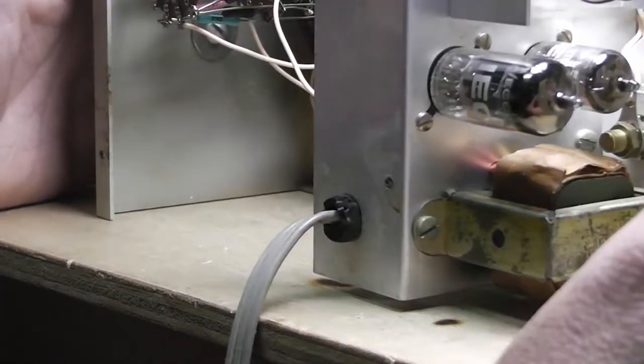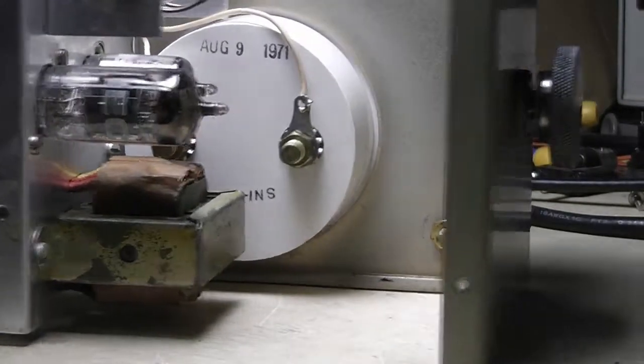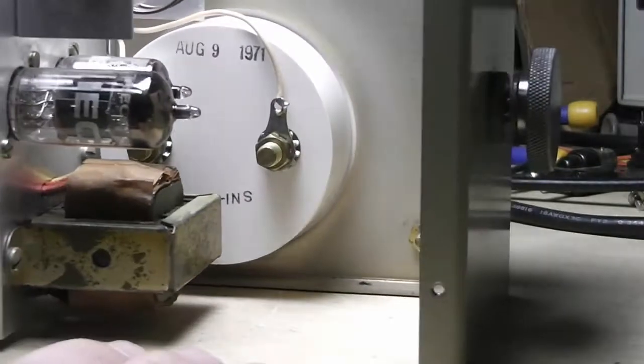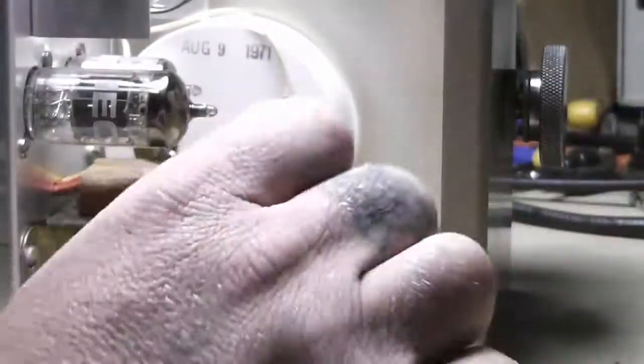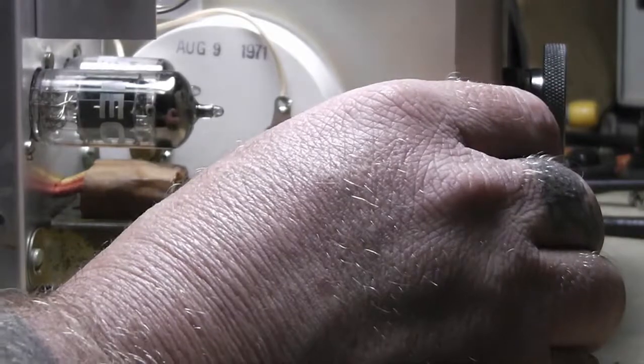I'll check the tubes out, do all that stuff before I even turn it on. Then I'll put it on the variac and bring it up slowly. We can see a couple things here. The meter itself has got a date of August 9, 1971 on it. It doesn't mean when this was put together, it just means when this meter itself was made.